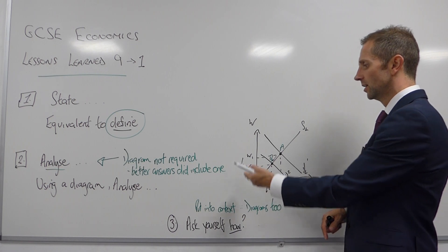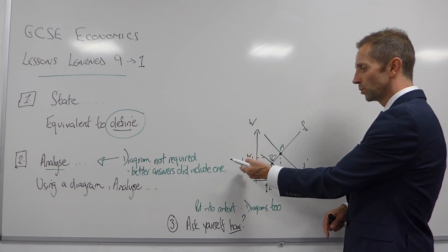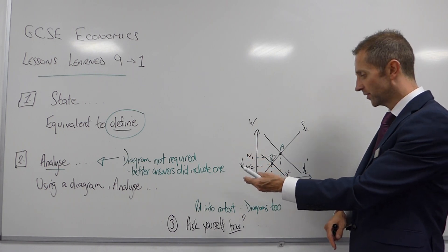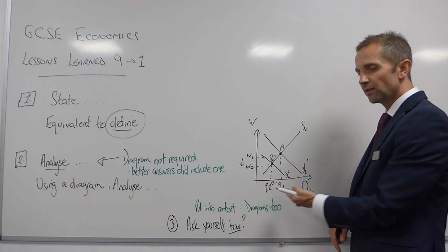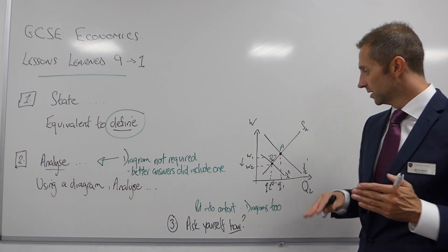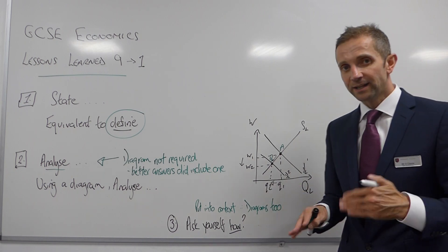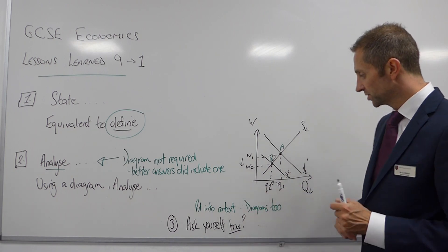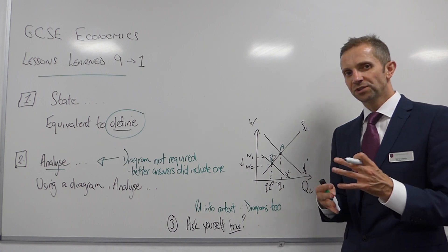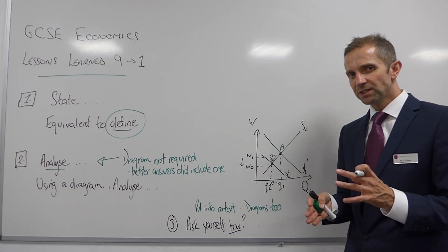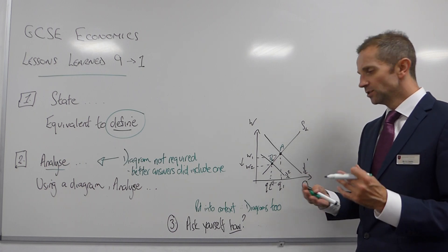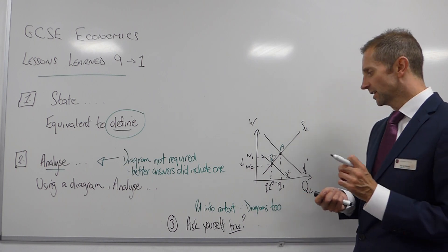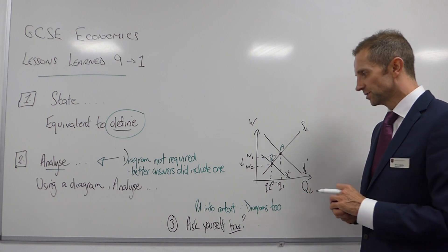So: demand shifts to the left; as a consequence, the wage rate in this particular labour market falls; the quantity of labour supplied and demanded is reducing. Once you start to use these phrases, you are performing quite sophisticated analysis.